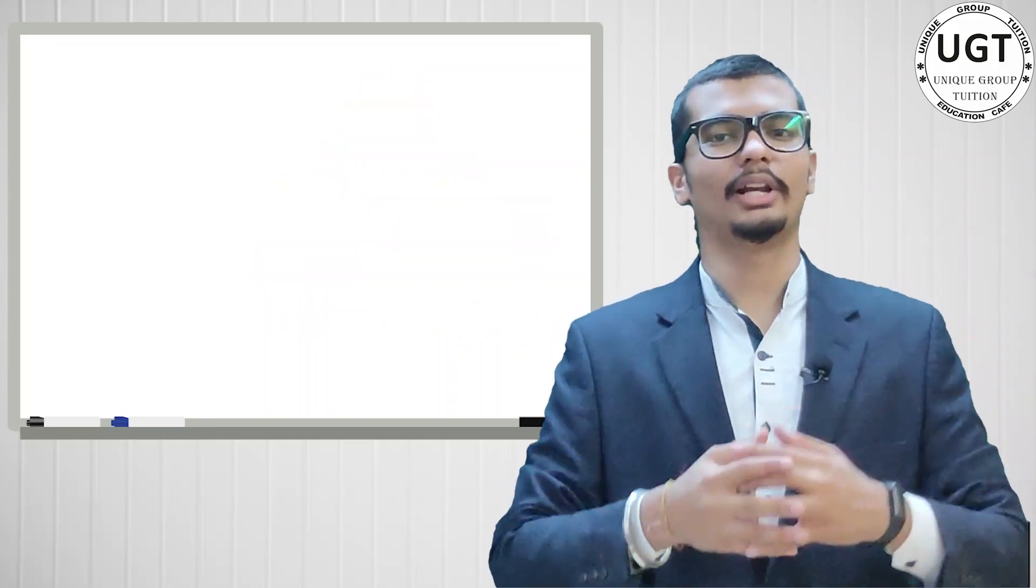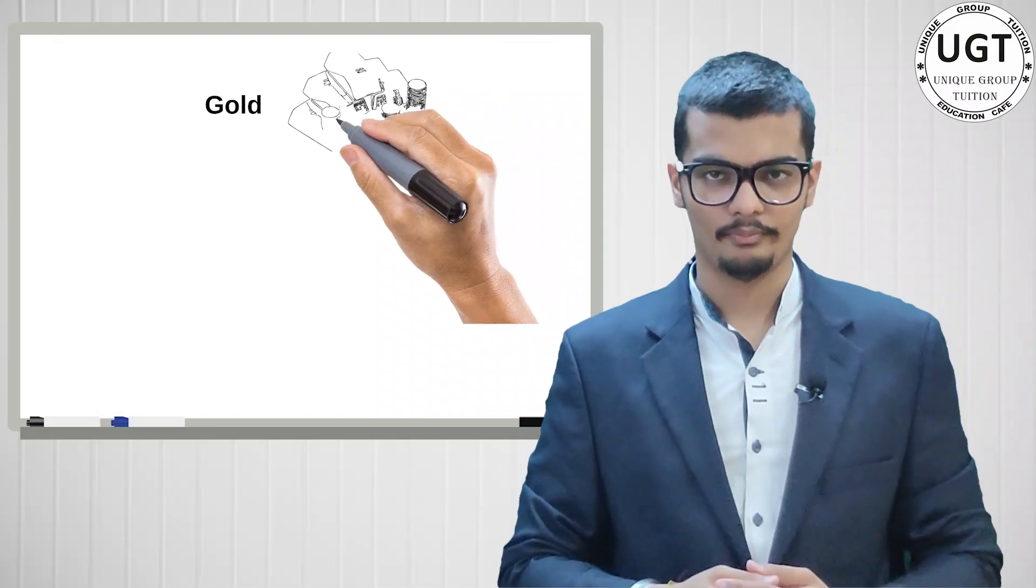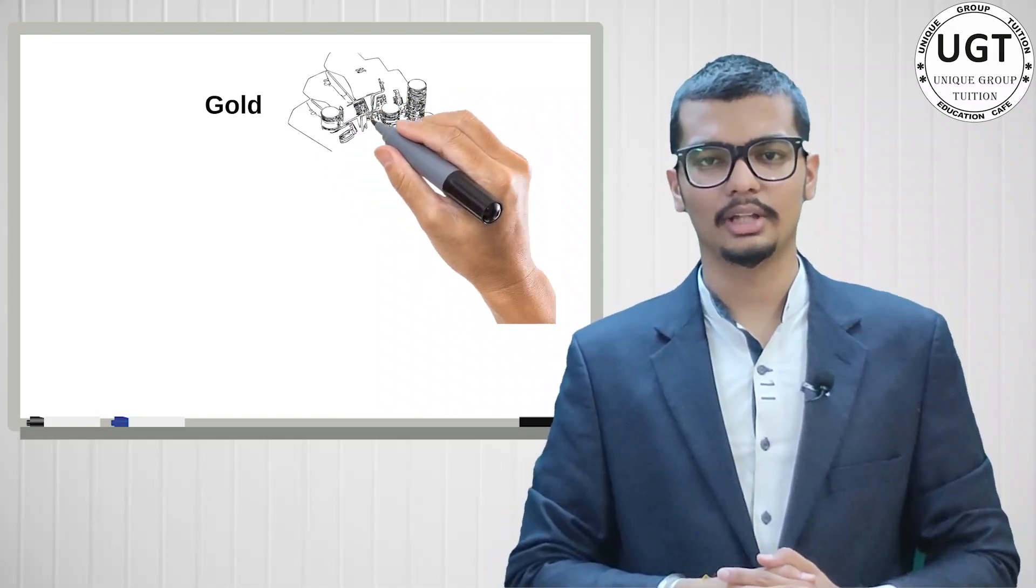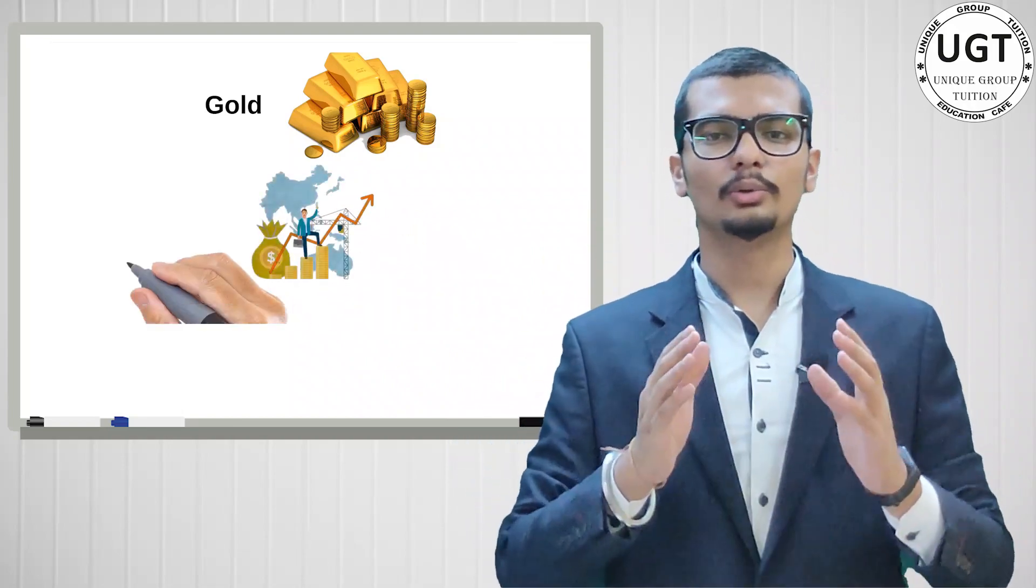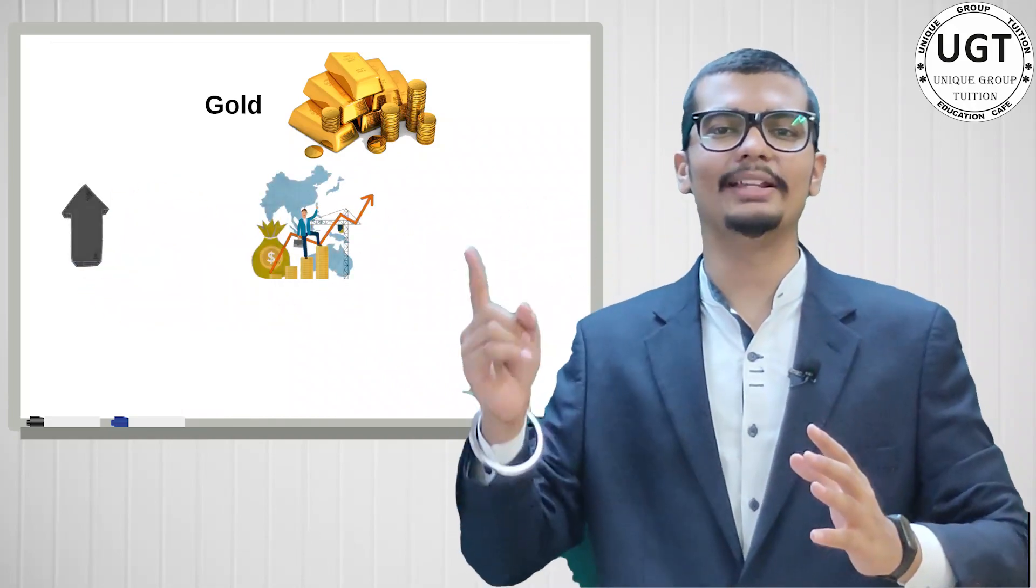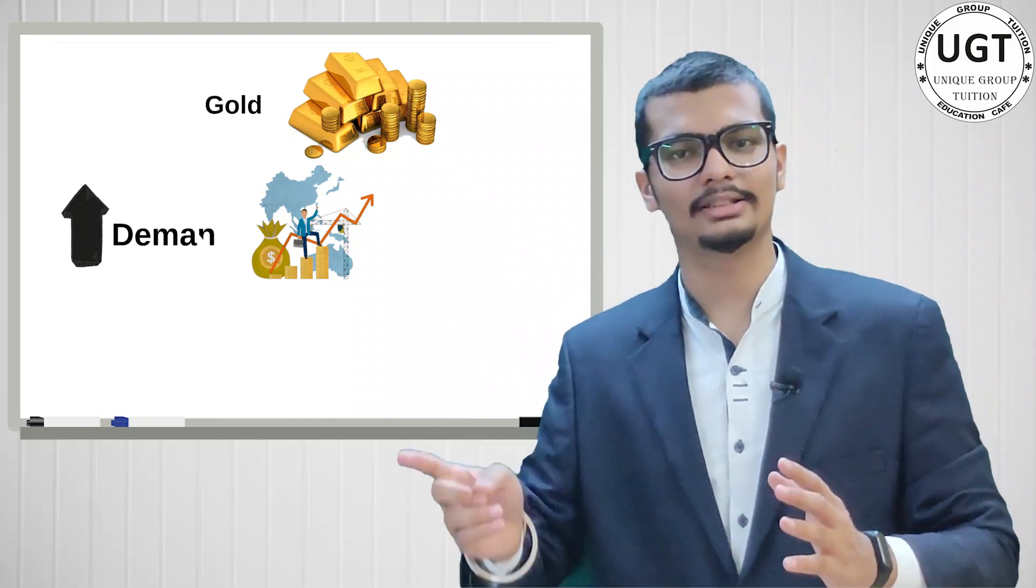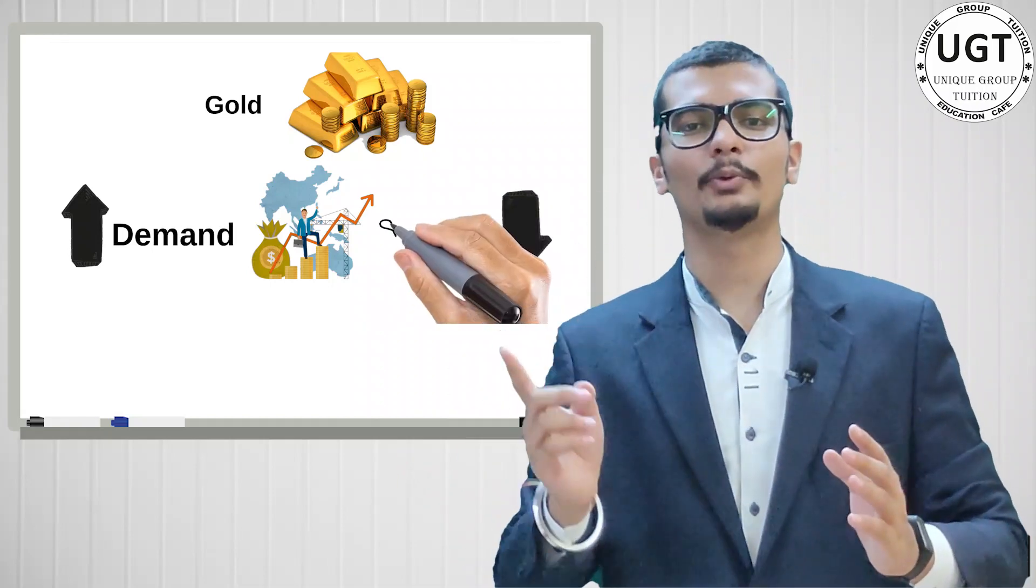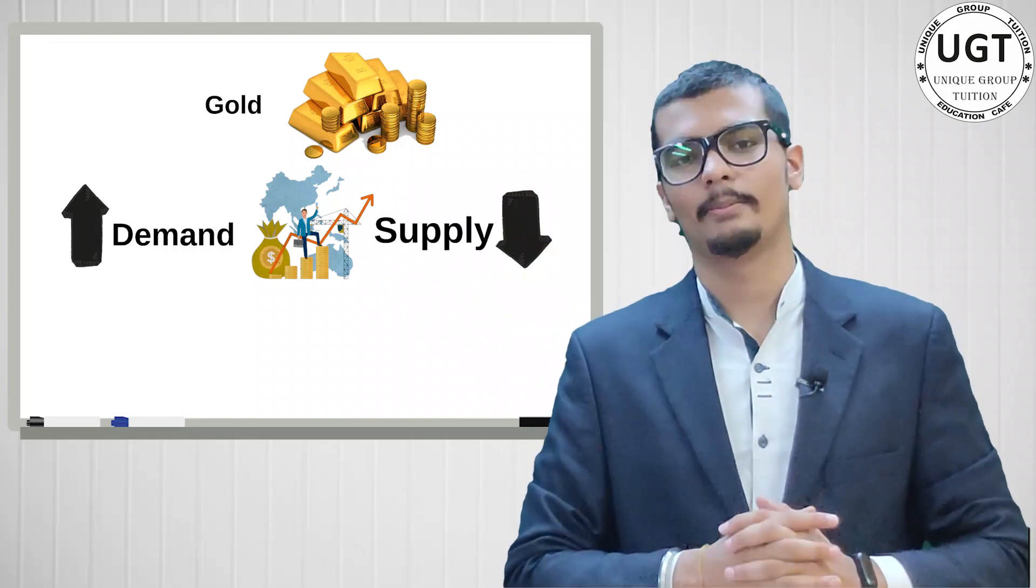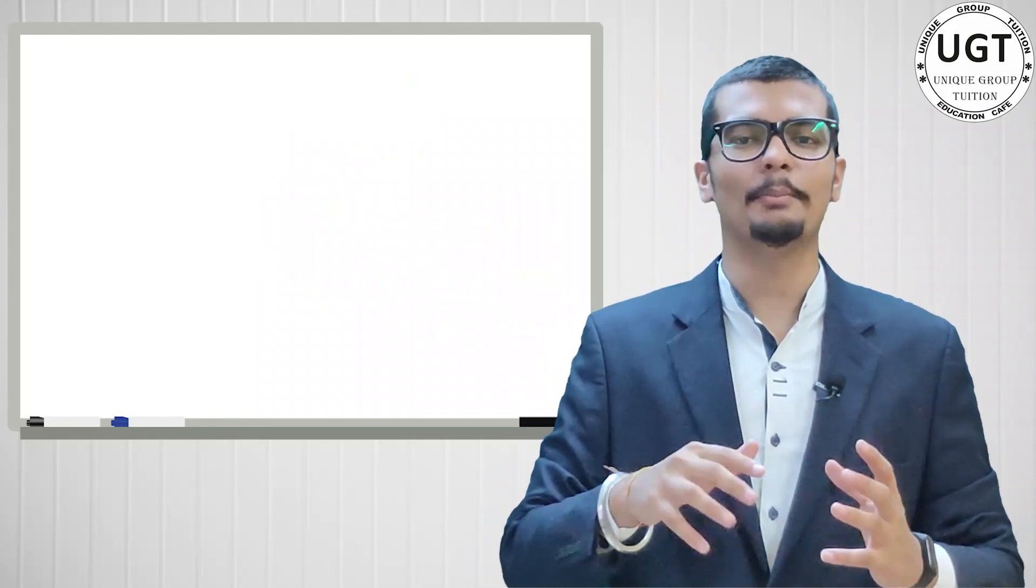In this example, gold. Gold works the same way. If gold demand increases and supply in the market is less, then prices rise. This is what we call inflation. This way we can see many different examples.